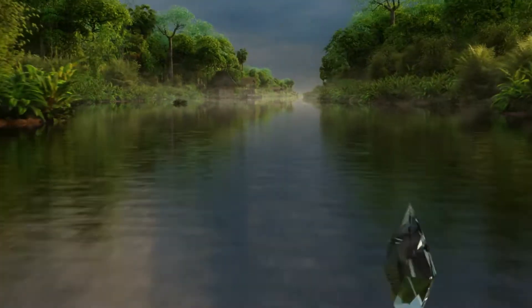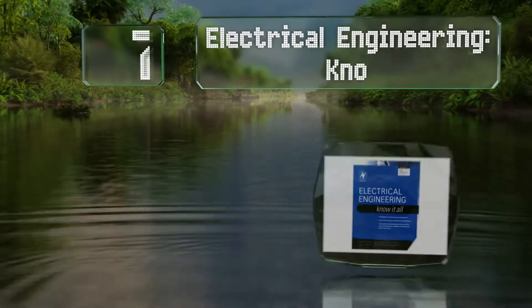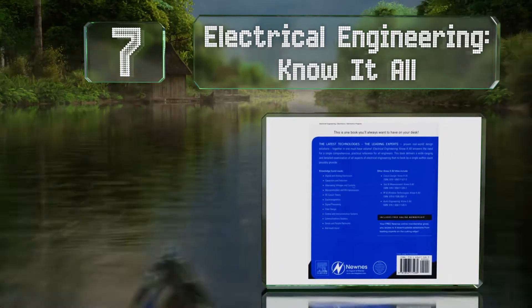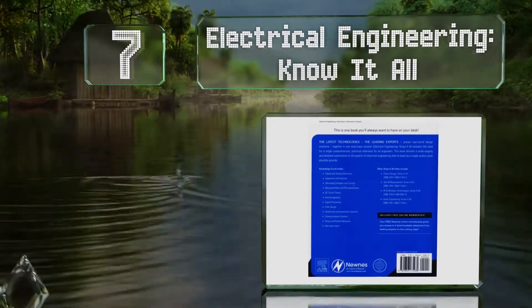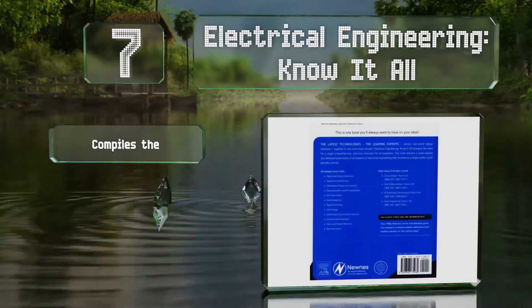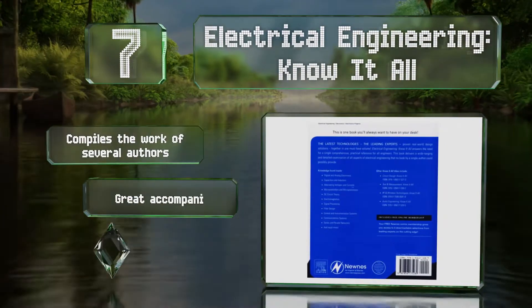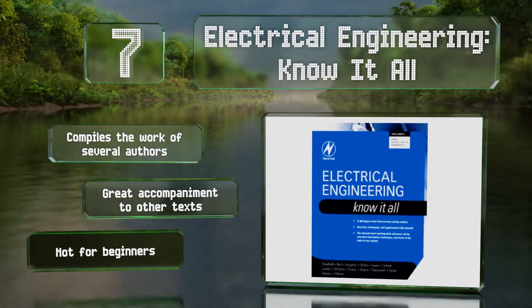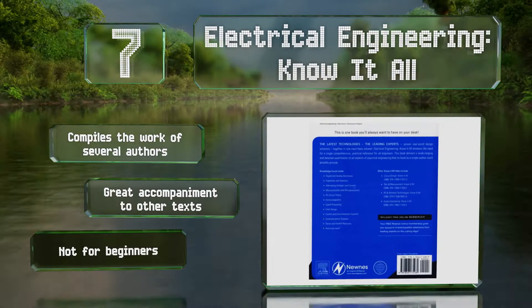At number 7, Electrical Engineering Know It All is part of a series of books intended both as learning tools and as references for working electricians and designers. It includes a variety of tricks and tips to help you troubleshoot just about anything. It compiles the work of several authors and is a great accompaniment to other texts, but this one's not for beginners.